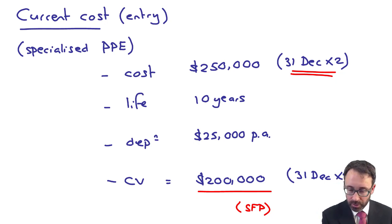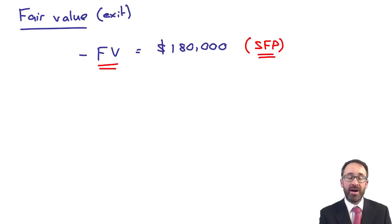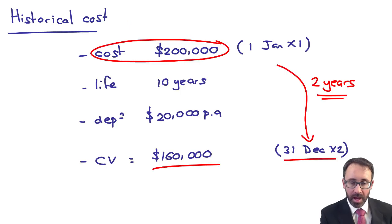So current cost is at $200,000. Fair value, we just made up a number and said it's $180,000. Your historical cost is there at $160,000.